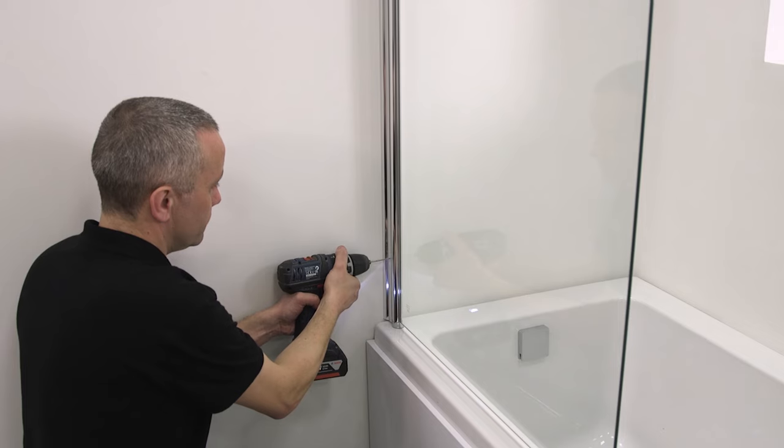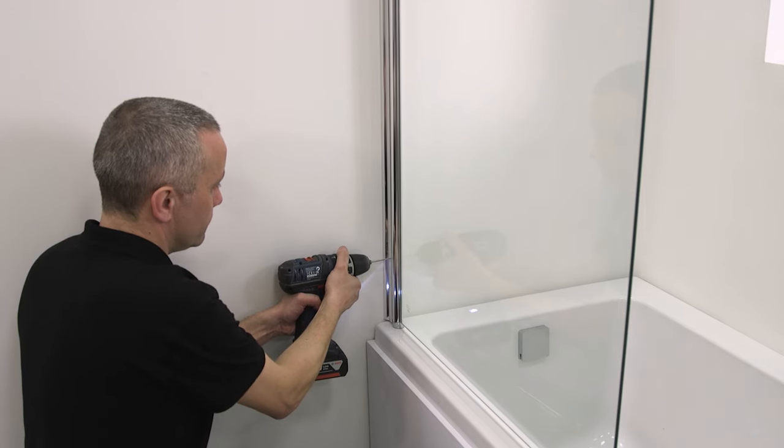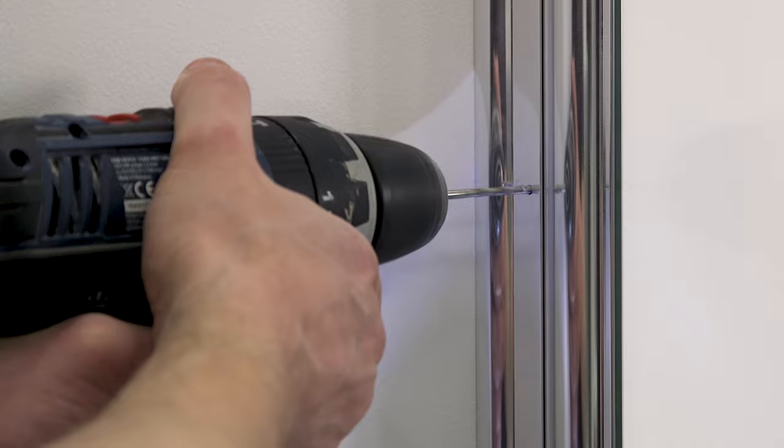Drill three evenly spaced holes through both the wall channel and bath screen, using the recommended drill bit size.